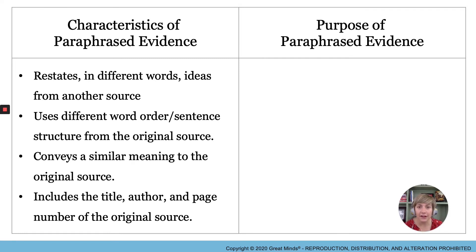Write that one down and pause the screen if you need to do it. The third characteristic of paraphrased evidence is that it conveys a similar meaning to the original source. And the fourth characteristic is that it includes the title, the author, and page number of the original source. And do you remember why we said it did that? Yes, because we need to avoid plagiarizing and to make sure that we give credit where credit's due.